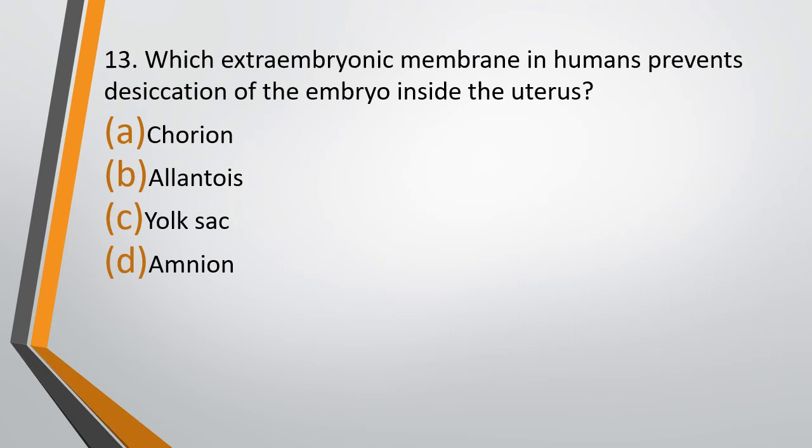Question 13. Which extra embryonic membrane in humans prevents desiccation of the embryo inside the uterus? Option A: Chorion. Option B: Allantois. Option C: Yolk sac. Option D: Amnion. The correct answer is Option D — Amnion.